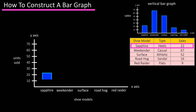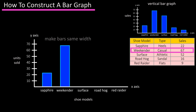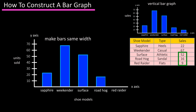Next, draw in the bar for the first shoe model, Sapphire, which had 22 sales. Then draw in the next bar for the Weekender shoe, which goes up to 67. If you're drawing these by hand, make sure the bars are the same width, or at least within reason. Continue this process for the three remaining shoes.